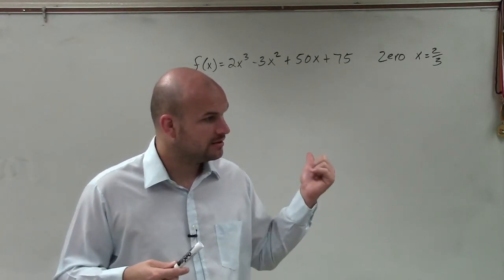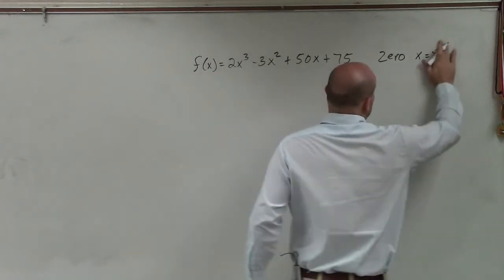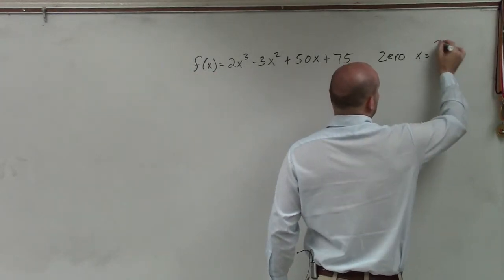Yes, I read it right. Zero is 3 over 2. 3 over 2. OK, thank you very much. That would cause problems.